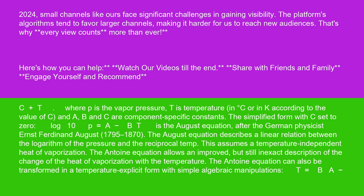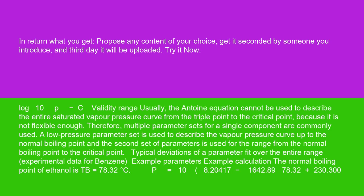The Antoine equation can also be transformed in a temperature-explicit form with simple algebraic manipulations. t equals b over a minus log 10p minus c.